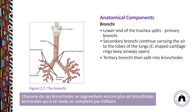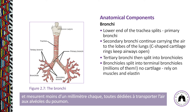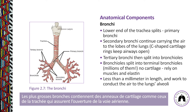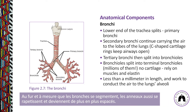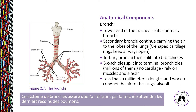Each bronchiole continues to split into even smaller terminal bronchioles. These tiny bronchioles number in the millions, are less than one millimeter in length, and conduct air to the lungs' alveoli. The larger bronchi contain C-shaped cartilaginous rings that keep the airway open. As the bronchi get smaller, so do the rings, becoming progressively more widely spaced. The tiny bronchioles have no cartilage and instead rely on muscles and elastins. This branching system ensures that air from the trachea reaches all regions of the lungs.